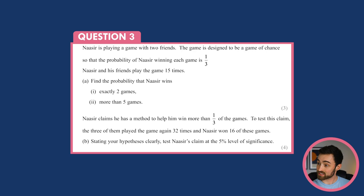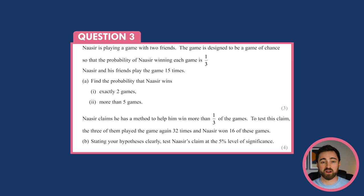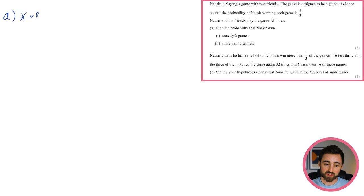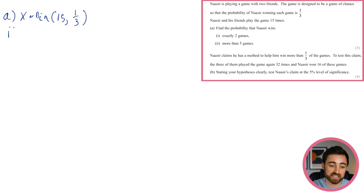This is a classic binomial situation: repeated experiment, fixed number of trials, only two outcomes — Nisir wins or he doesn't. If X is the number of times he wins, then X is distributed binomially with n equals 15 and p equals one third. Part i just asks for P(X = 2). Use your calculator: menu, 7 for distribution, binomial PD, variable, x = 2, n = 15, p = 1/3.